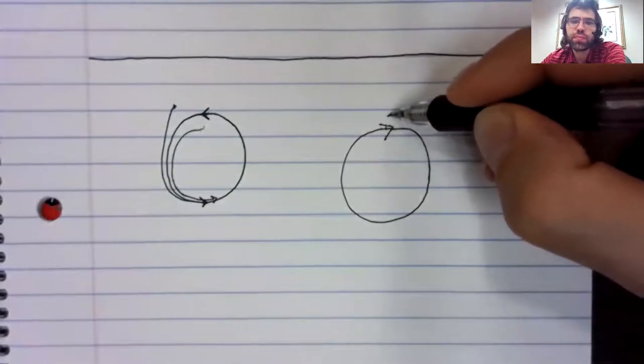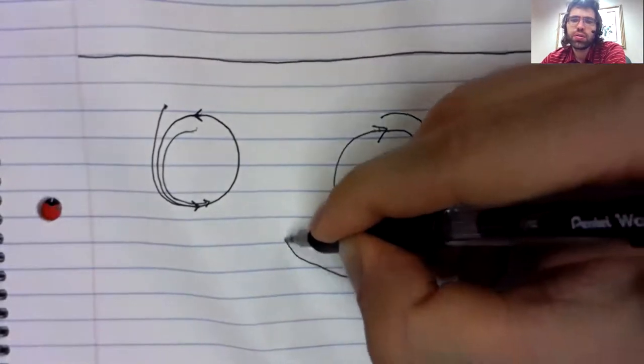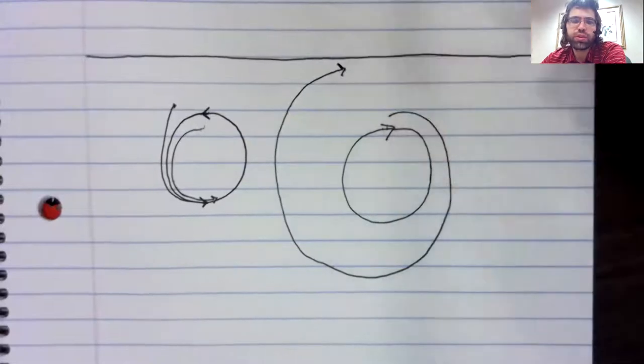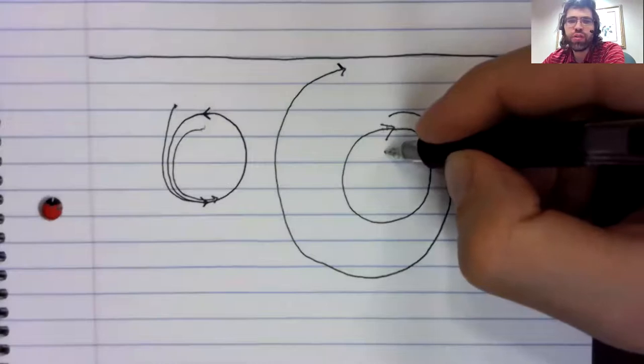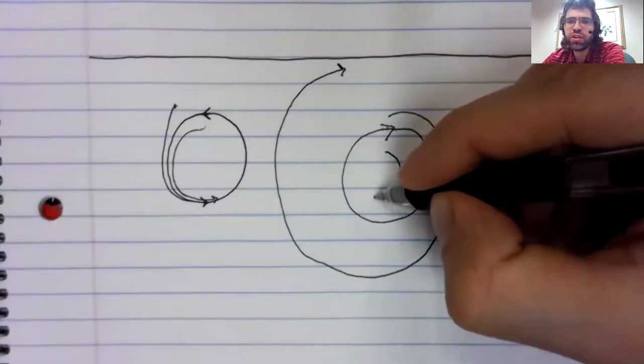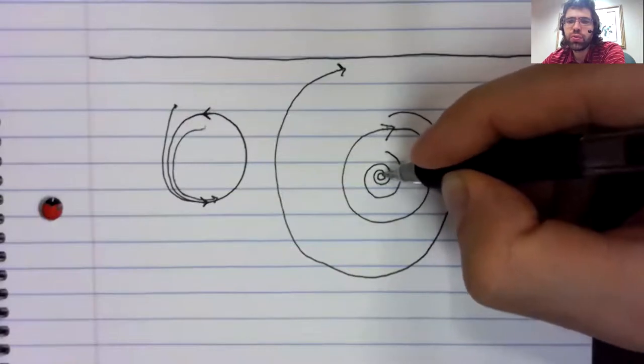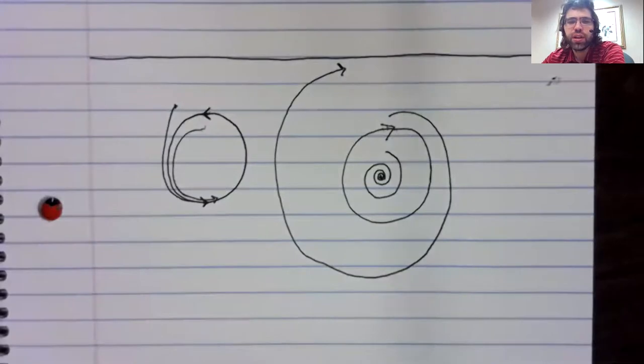Or it could be that if you are pushed off an orbit, you leave the orbit. You go away from it. Maybe if you are pushed off in this direction, you spiral in towards a fixed point.